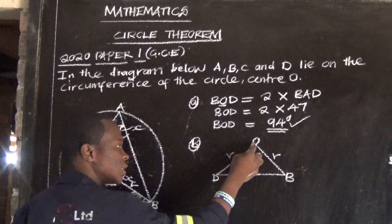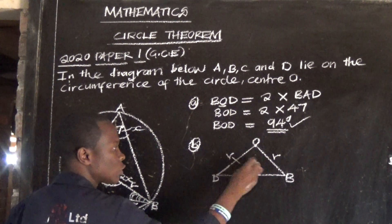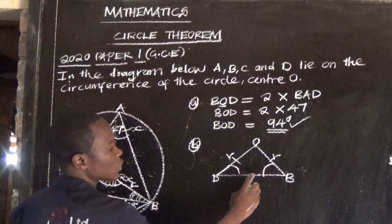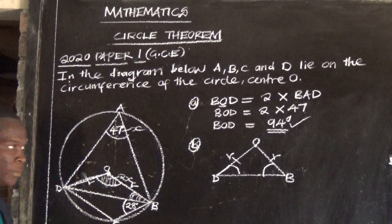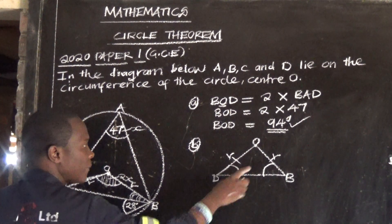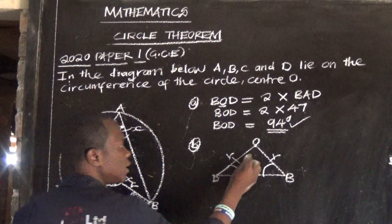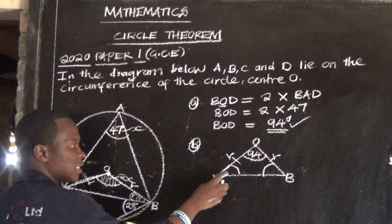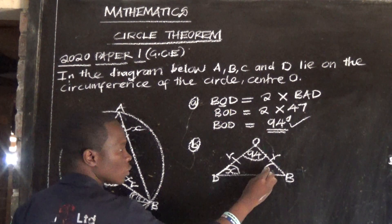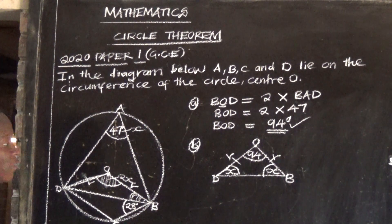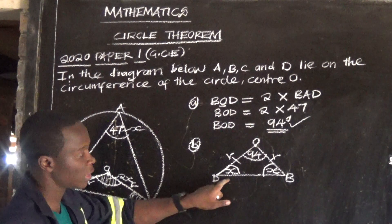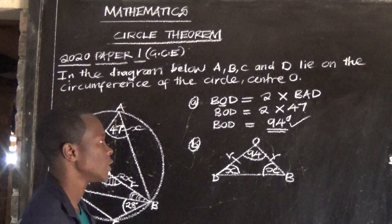Take note of this triangle. Since OD and OB are both radii, these two lines are equal, so the base angles of this isosceles triangle are also equal. The property states that base angles of an isosceles triangle are equal. Remember angle BOD is 94°. The two base angles are equal, so we call them both X. Since we don't know their value, we assign X to both.